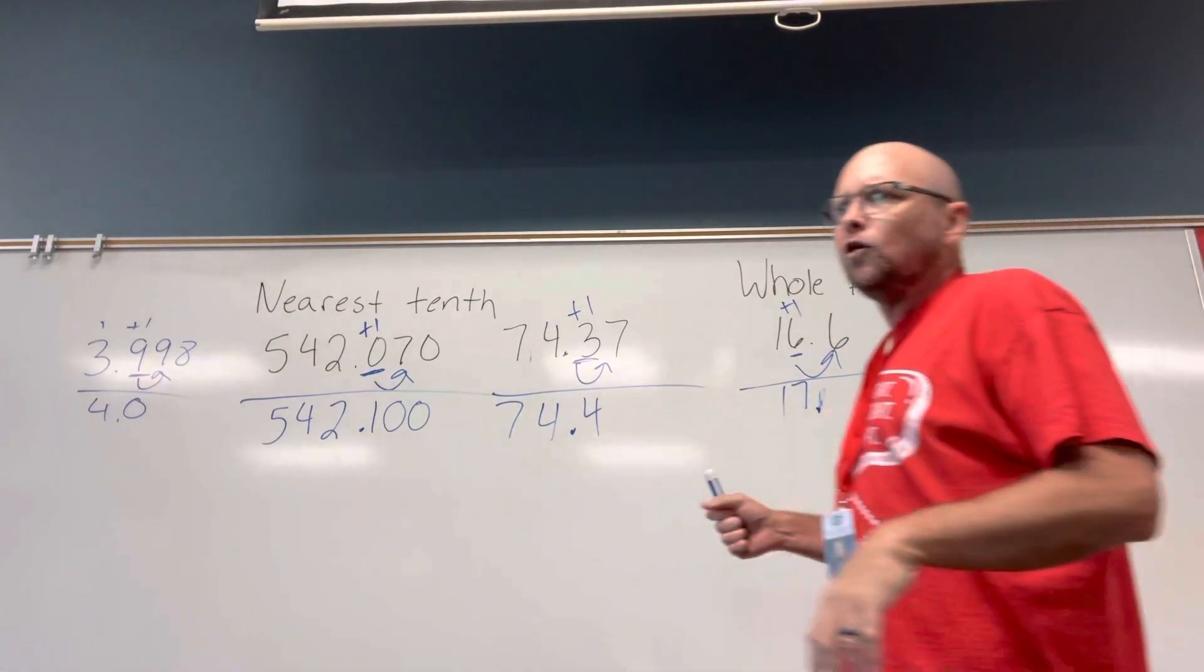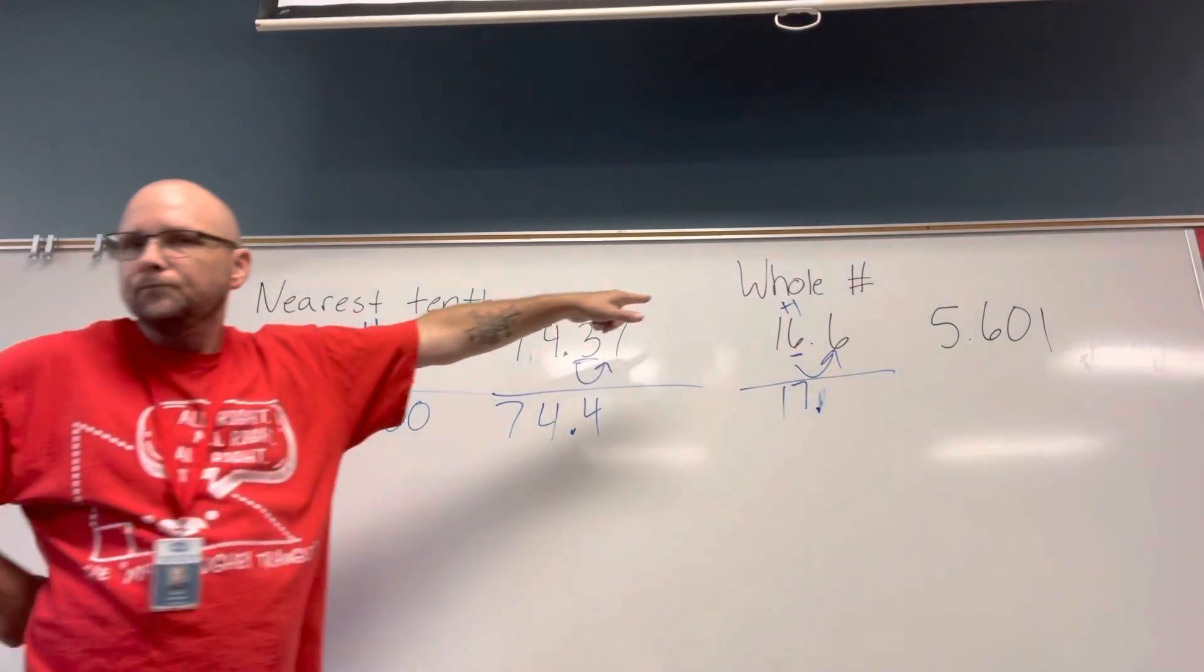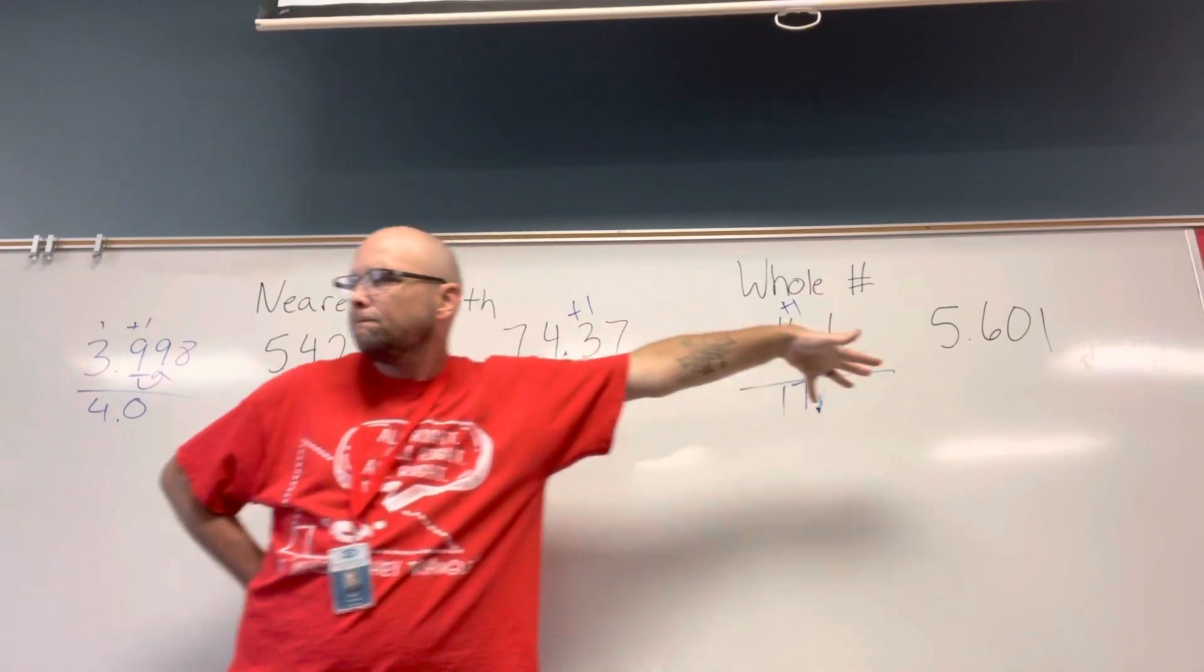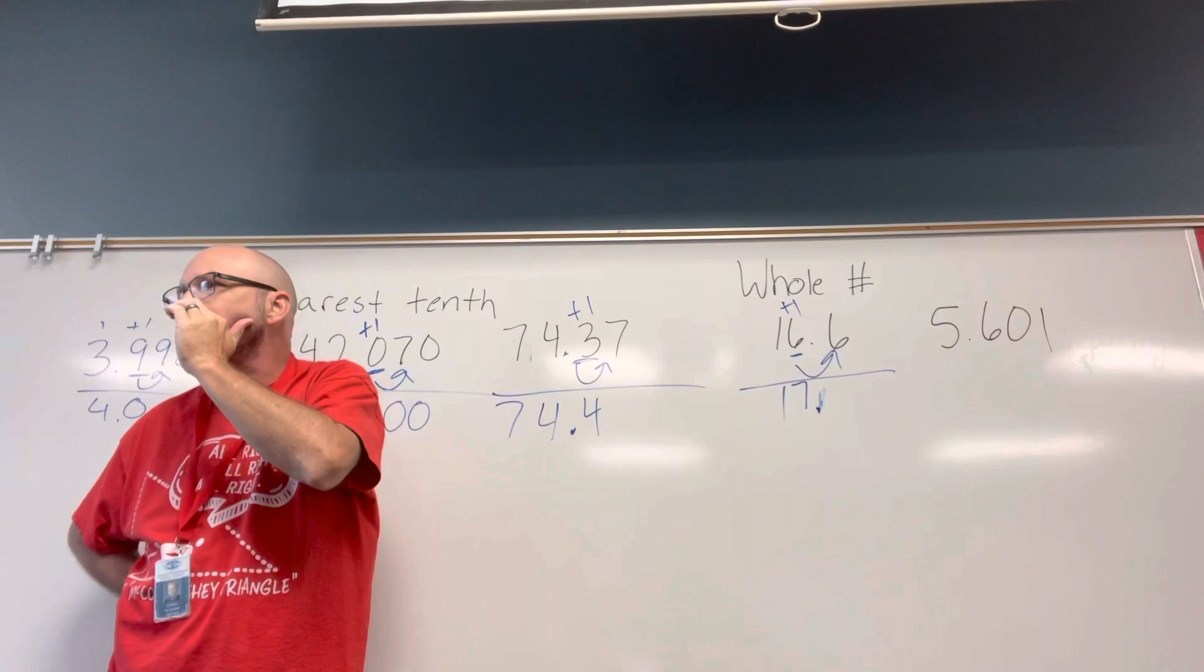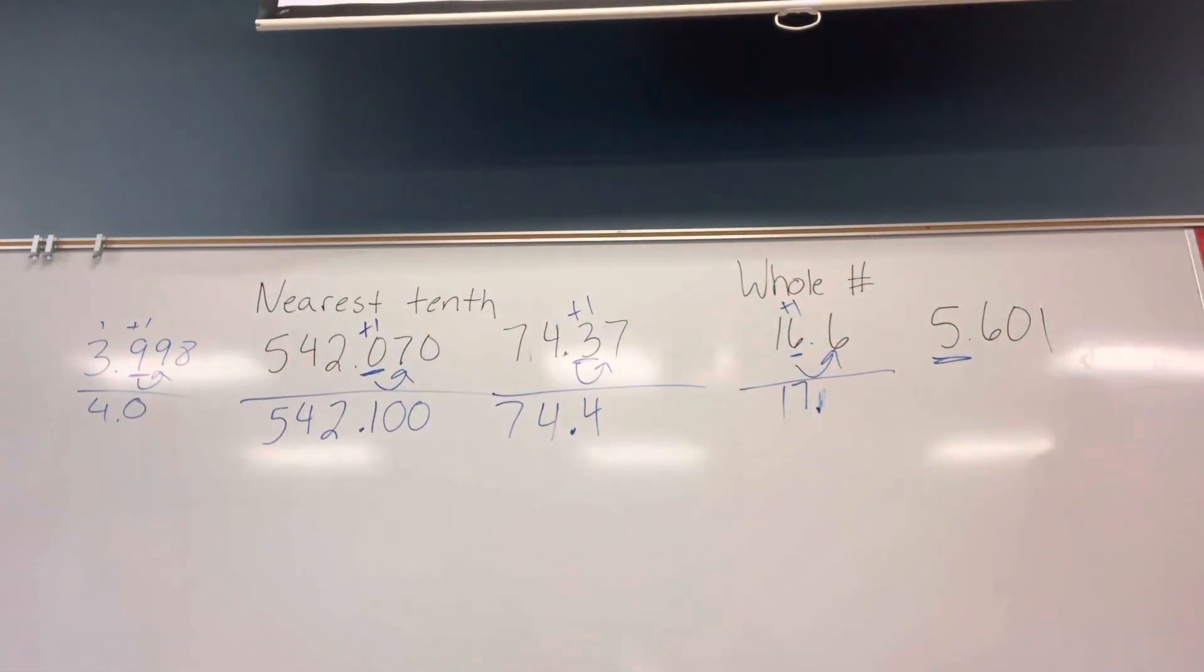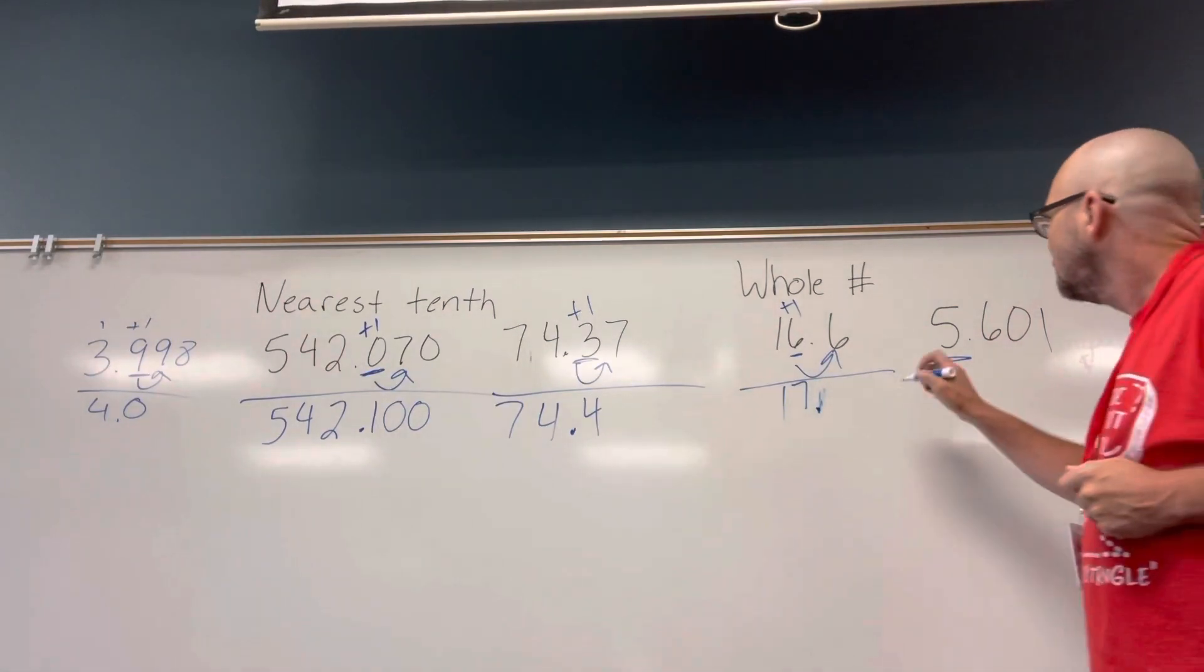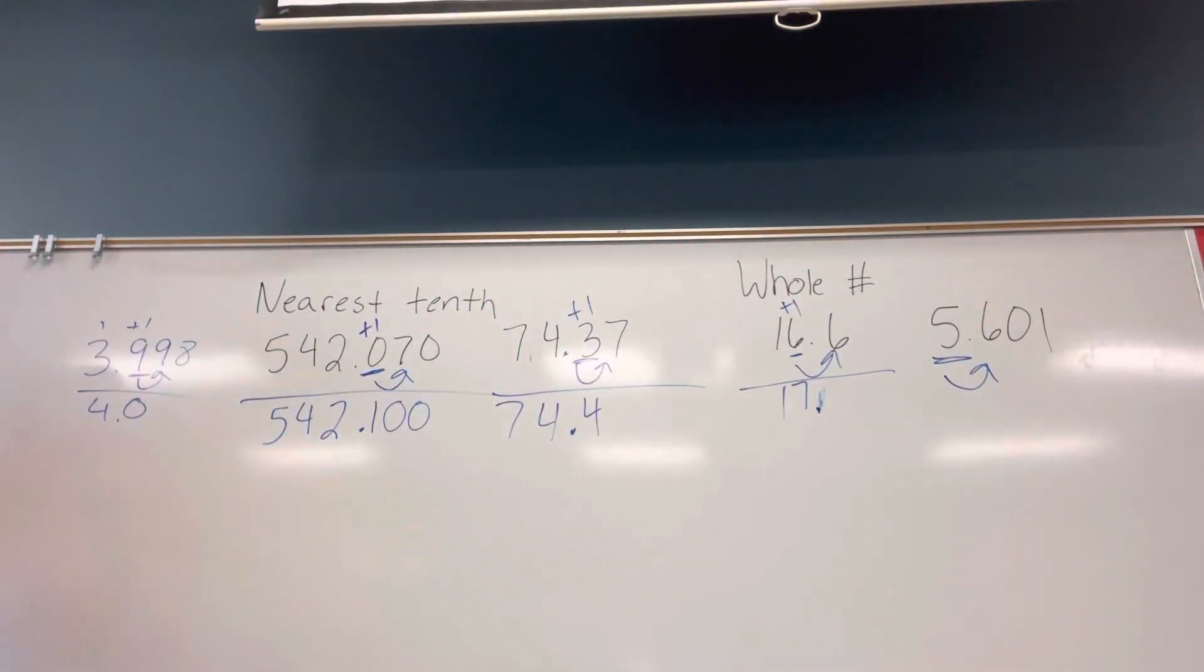Rounding to this, to the nearest whole number. Travis, what number is the nearest whole number in this one? The one's place. And what's in the one's place? Five. Muy bien. So I'm going to do, I'm either going to add one to the fives place, or I'm going to leave it the same. I'm going to look behind it. In the tenths place, there is a six. So does that mean I leave the five the same, or I add one to it? Add one to it. I add one to it.